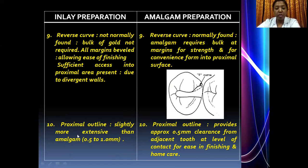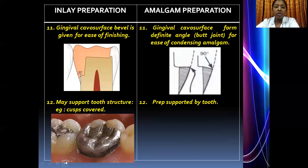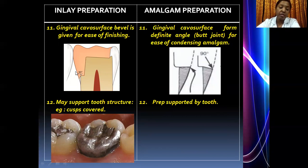In an inlay, the proximal outline form is more extensive compared to amalgam. For amalgam, you just establish 0.5 mm clearance from the adjacent tooth and the proximal outline form is not extensive. In a class 2 inlay proximal box, you have a primary flare, secondary flare, skirt, and collar preparation — all making the outer end of the proximal box very extensive. None of those features are present in a class 2 amalgam. Regarding the gingival cavosurface bevel: for a class 2 inlay, a gingival cavosurface bevel is given as a retentive feature allowing a thin margin of metal to reinforce the remaining tooth structure. For a class 2 amalgam, it is a butt joint — no gingival cavosurface bevel is given.